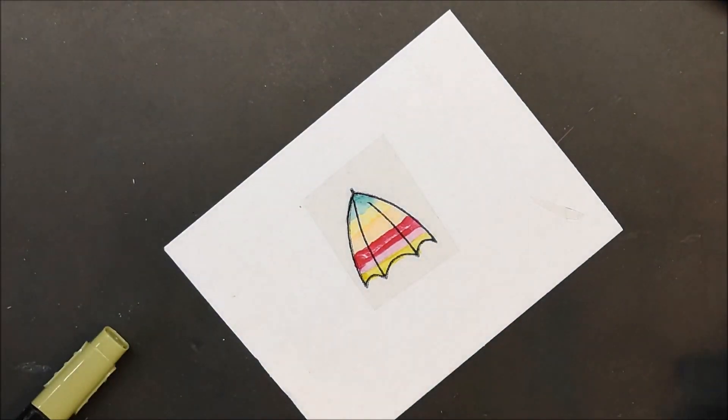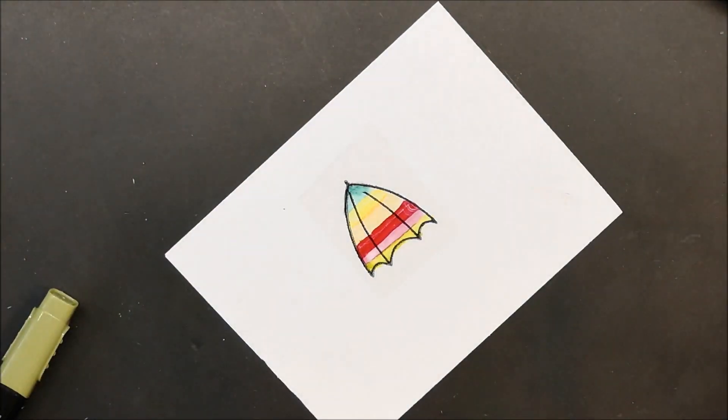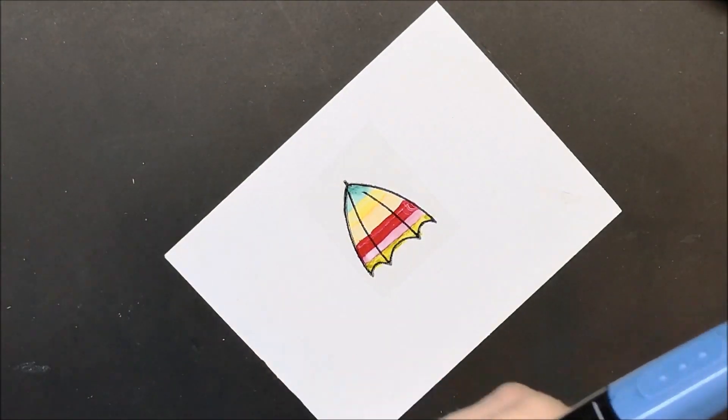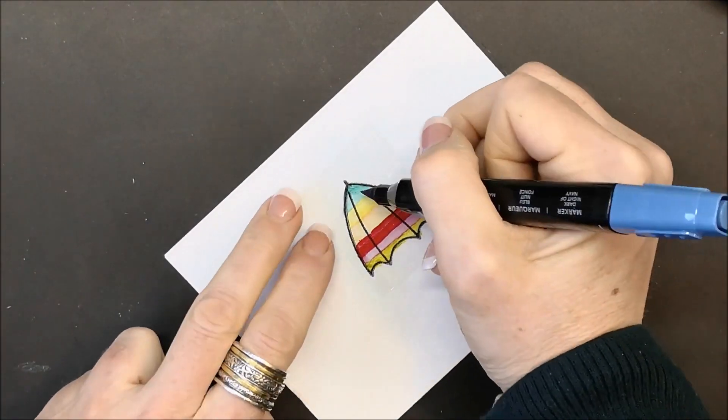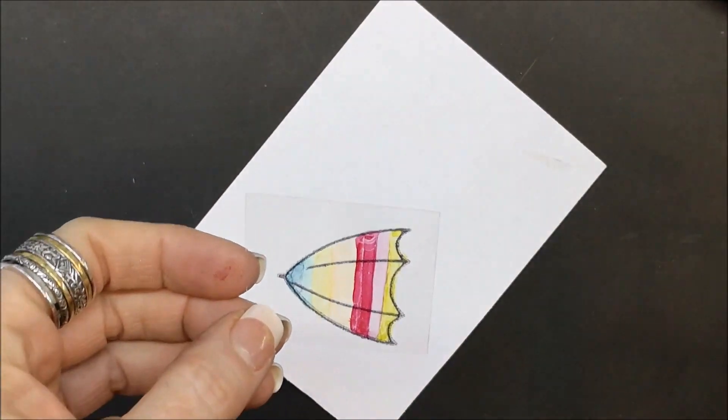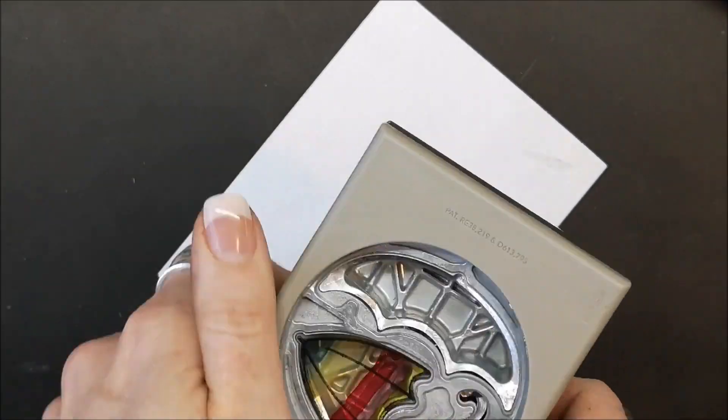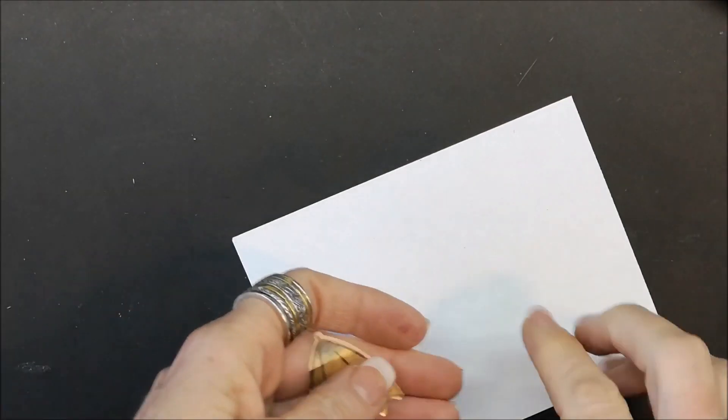I'm going to put some dark Night of Navy right at the tip of the umbrella. Now I'm going to cut this out with my punch. This is such magic.